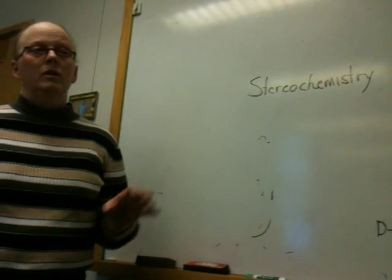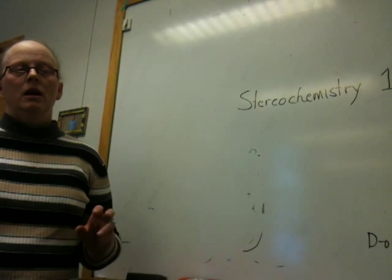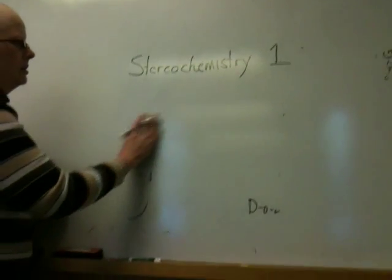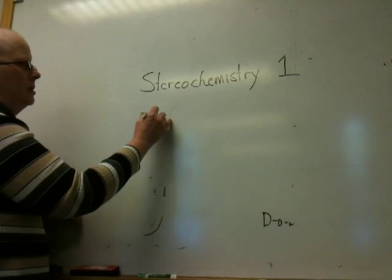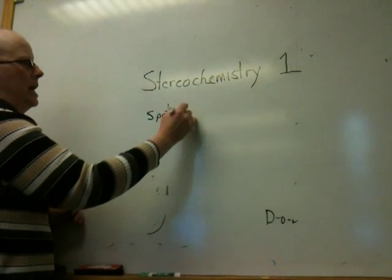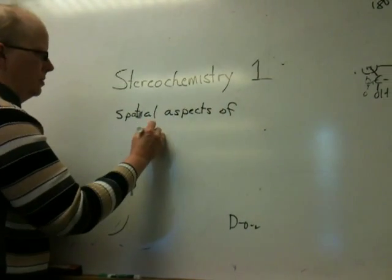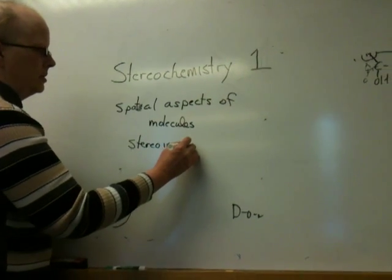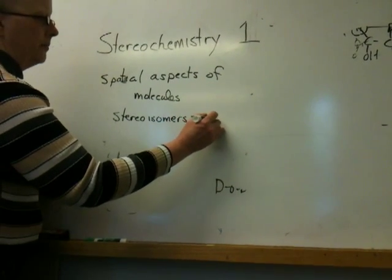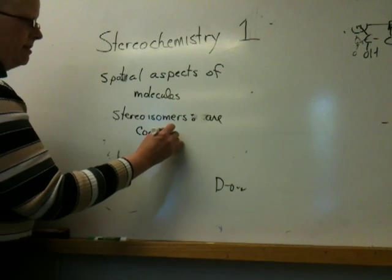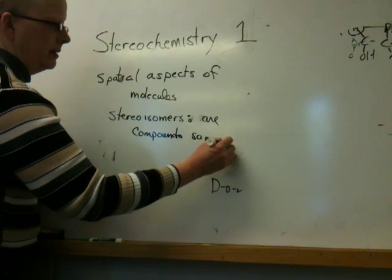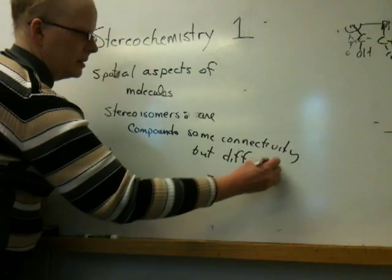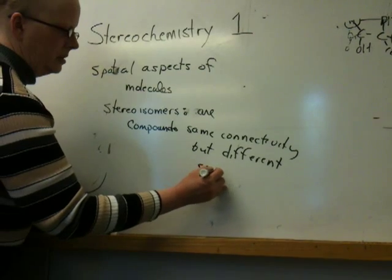In Stereochemistry 1, I'm just going to give you a general overview about stereochemistry of compounds that have one center in them, and I'll explain what that means in a minute. What stereochemistry involves is a variety of things — it has to do with the spatial aspects of molecules. It deals with stereoisomers, and stereoisomers are compounds that have the same connectivity but different spatial orientation.